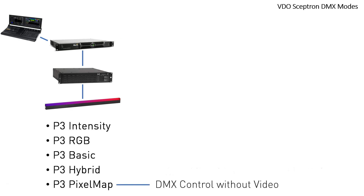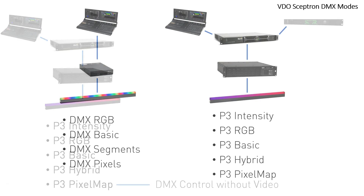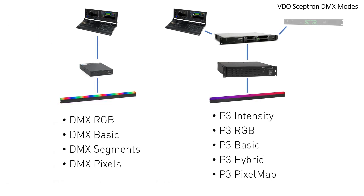The last mode, P3 pixel map, does not require a media server to be connected, as the fixtures will be driven purely from DMX data sent from the lighting desk. On the P3 you can decide in how many segments each fixture is split.